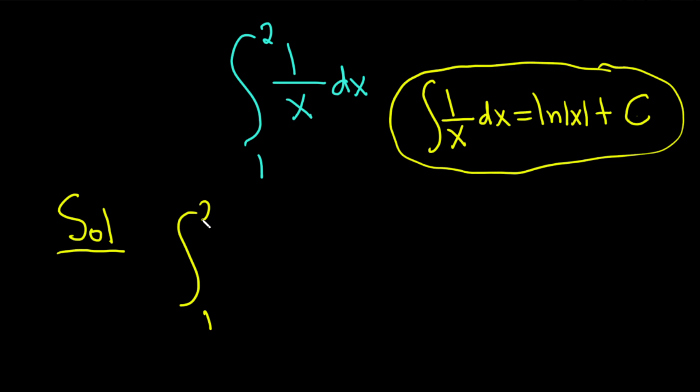So we have the integral from 1 to 2 of 1 over x dx. And so when we integrate this we just get the natural log of the absolute value of x. And we're going from 1 to 2.